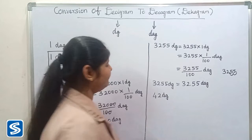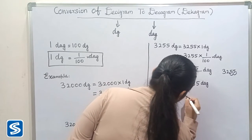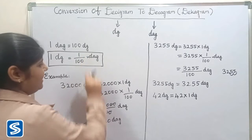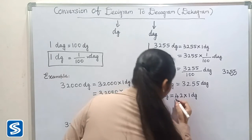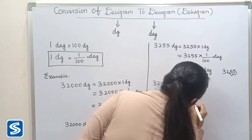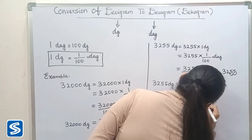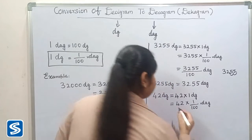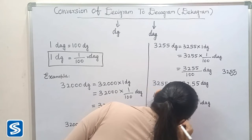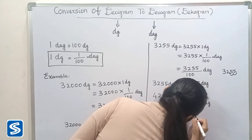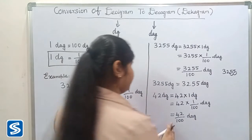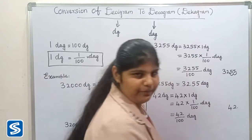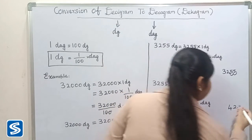For example, we can take 42 desigrams. 42 desigrams can be written as 42 multiplied by 1 desigram. Now we have to substitute 1 by 100 decagrams in the place of 1 desigram. So 42 multiplied by 1 by 100 decagrams. 42 multiplied by 1 will be 42, so 42 by 100 decagrams. The easy way to divide by 100 is to move the decimal point 2 places to the left.